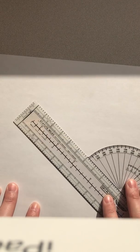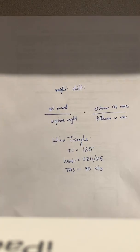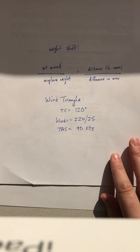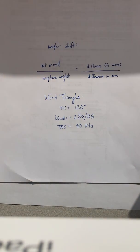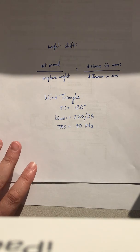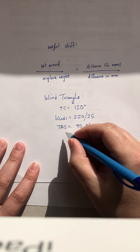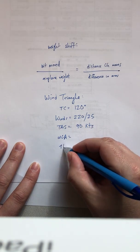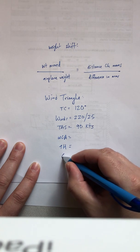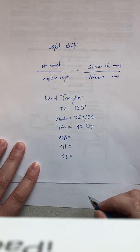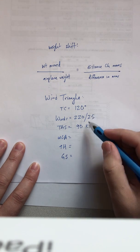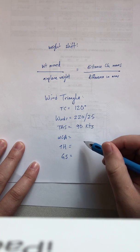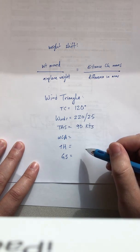Just like with our other wind problems, we are given a true course, wind direction, wind velocity, and a true airspeed. After we're done, we should come up with a wind correction angle, a true heading, and a ground speed — the same data we'd get from the E6B, but using our plotter to make a wind triangle.